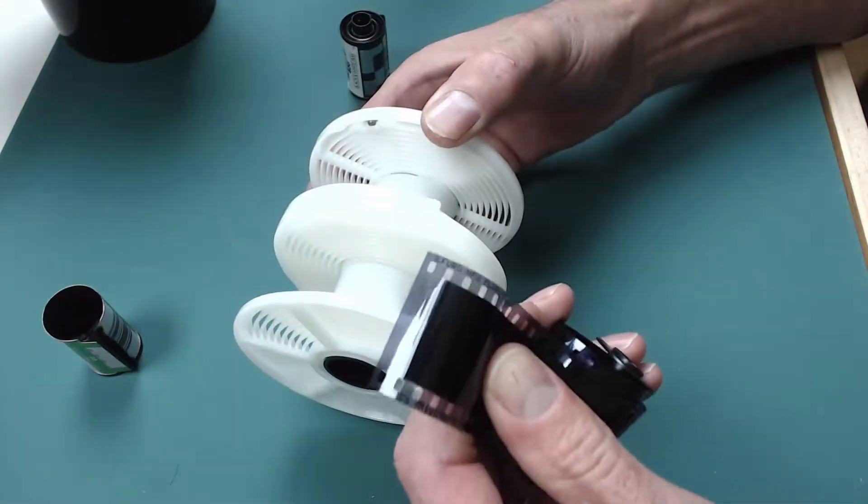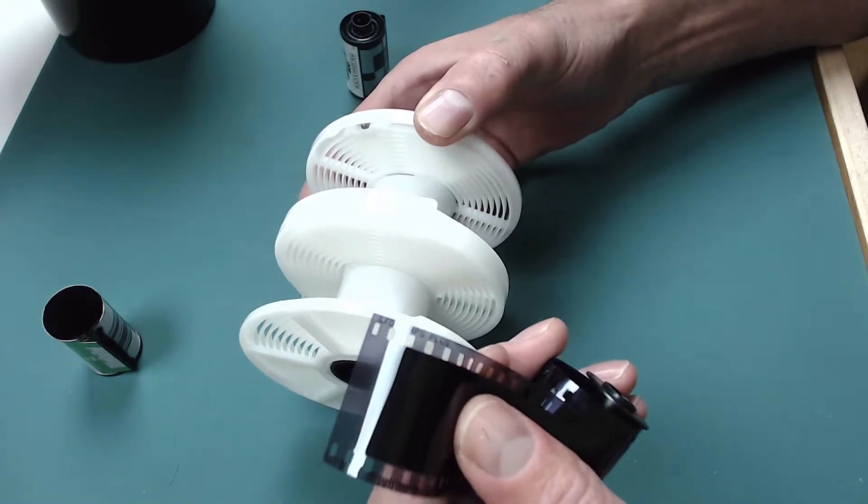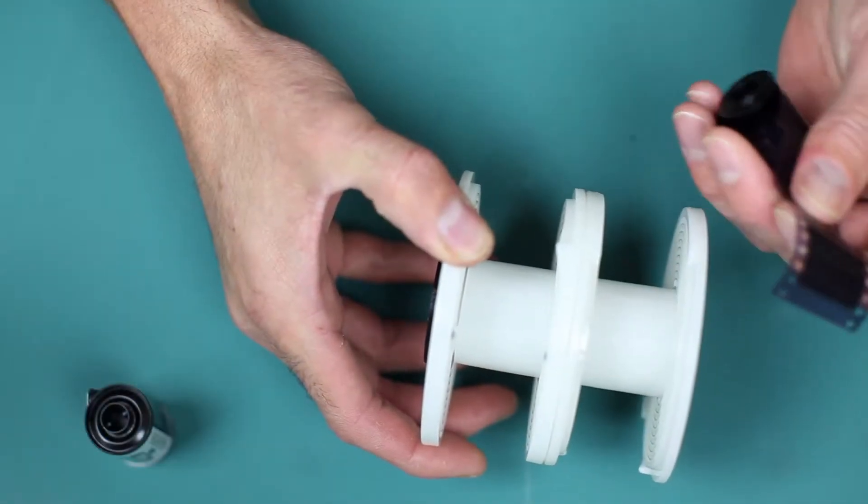Once you've cut that off, it's in total darkness. I use a changing bag. I don't sit in a darkened room, I just put everything inside a changing bag to do this.